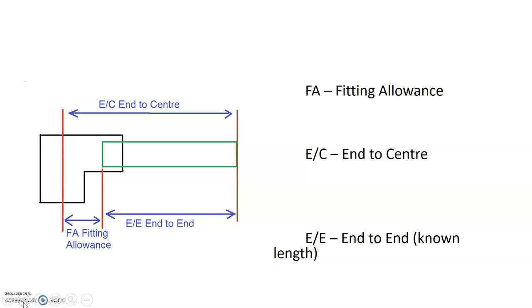In order to find the fitting allowance, we need to know a couple of terminologies. So we have our FA, our fitting allowance, which we've used before, and that would be our measurement from the center of our fitting to where the pipe stops when it comes into our fitting.